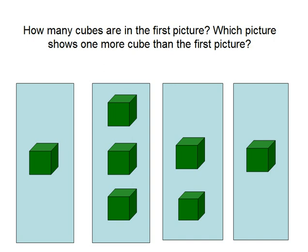How many cubes are in the first picture? Which picture shows one more cube than the first picture? The first picture shows one cube, so the answer is two cubes. This is the right answer.